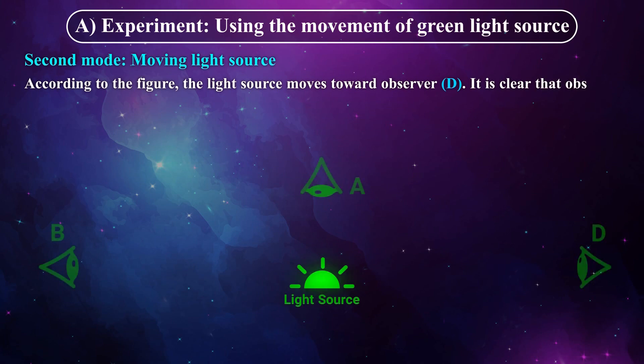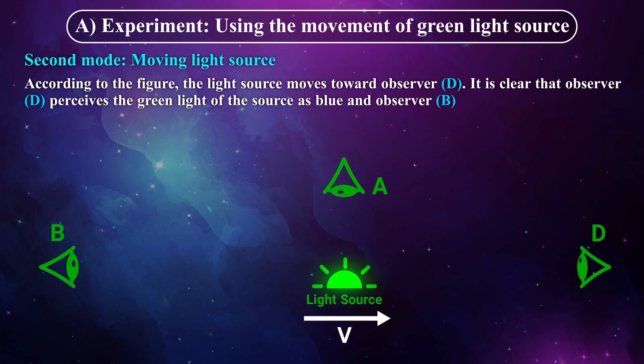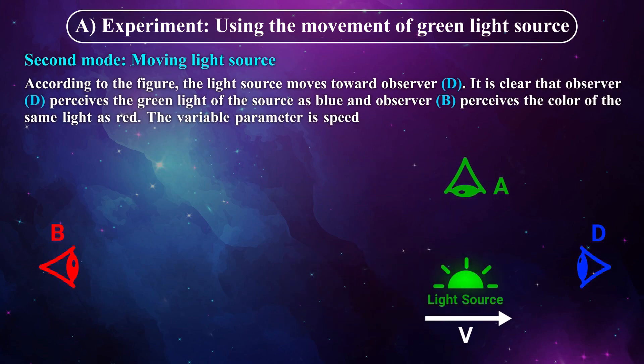Second mode: moving light source. According to the figure, the light source moves toward observer D. It is clear that observer D perceives the green light of the source as blue and observer B perceives the color of the same light as red. The variable parameter is speed and, as a researcher, ignoring the color change is impossible.